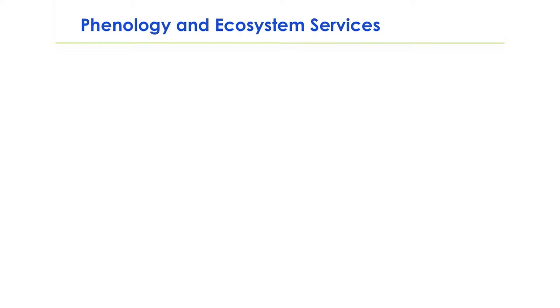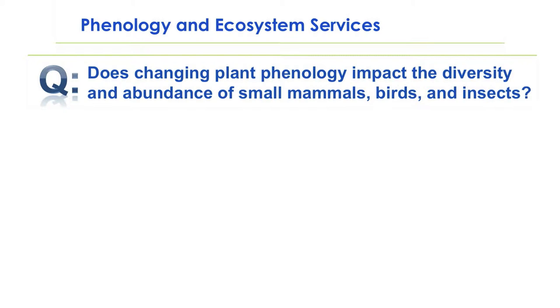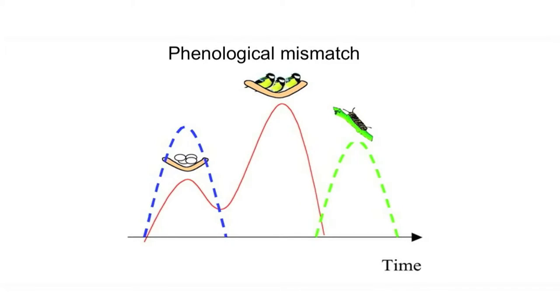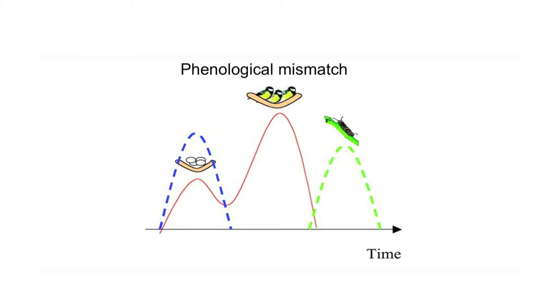Hopefully we'll be able to answer the question: does changing plant phenology impact the diversity and abundance of a number of taxa, including small mammals, birds, and insects? We expect this to happen because of a phenomenon referred to as phenological mismatch — when the timing of important events are no longer synchronized in response to climate change. The example depicted here includes a bird species whose onset of egg-laying is triggered by day-length, which is not changing. But hatching sometimes occurs before the insect prey they depend on have emerged, which can have disastrous consequences for reproductive success and population dynamics of these birds.